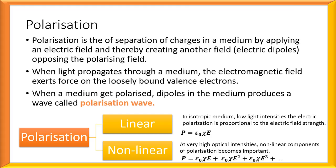That electric field is created due to electric dipoles. When light propagates through a medium, the electromagnetic field interacts and exerts force on the loosely bound valence electrons, and these valence electrons are drifted away from their ions. When a medium gets polarized, the dipoles in the medium produce a wave called the polarization wave. Therefore, after polarization from a medium, we can expect the incident wave and also the polarization wave. There are mainly two types of polarization: linear polarization and non-linear polarization.